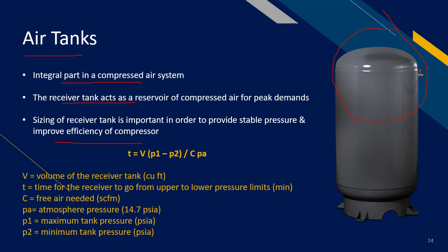Below shows the common sizing formula used to size air tanks. V, which is what we are looking for, is the volume of the receiver tank. T is the time for the receiver to go from upper to lower pressure limits. C is the free air needed. PA is the atmospheric pressure. P1 is the maximum tank pressure. And P2 is the minimum tank pressure. All these values can be taken from actual site conditions, and from this, the volume of the receiver tank can then be calculated easily.